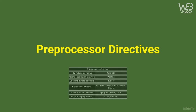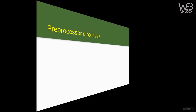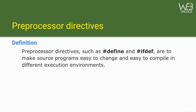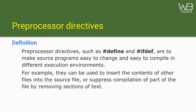In this section we will learn about preprocessor directives — how to use them and what they are used for. Preprocessor directives such as #define, #include, and #ifdef are used to make source programs easy to change and easy to compile into different execution environments. For example, they can insert the contents of another file into the source file using #include, or suppress compilation of parts of code using conditional compilation directives.